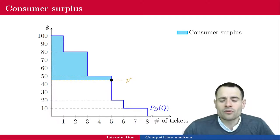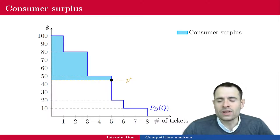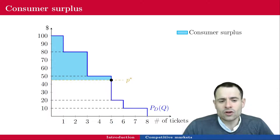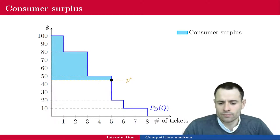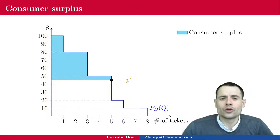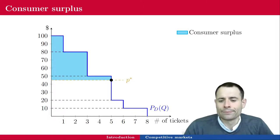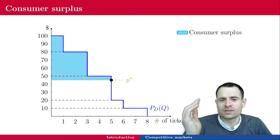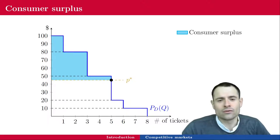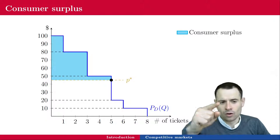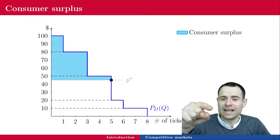Because 1.5 tickets or 1.8 or 2.7 cannot be sold, the demand function here looks stepwise — like a stair function. If the good is perfectly divisible, think about buying sugar that you can measure up to a gram or a tenth of a gram; the demand function is going to look like a straight line or a curved line without any kinks.